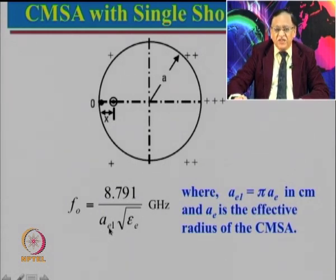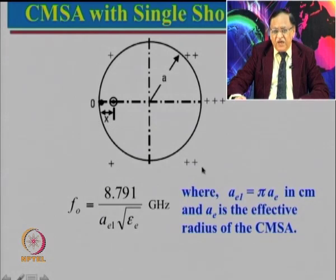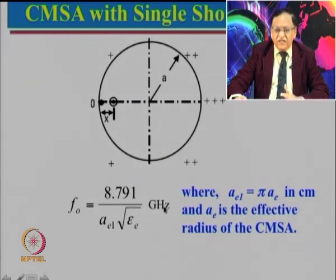Earlier the short was at one end and A was the radius, with field variation from 0 to plus. But now the effective radius A_E1 is obtained by taking A_E1 = π·A_E, representing half the circumference. Using this formula, one can realize the antenna simply.